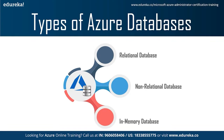The second type is the non-relational database, also known as NoSQL databases. A NoSQL database provides a mechanism for storage and retrieval of data modeled in means other than the tabular relations used in relational databases. Non-relational databases are increasingly used in big data and real-time web applications, and sometimes called 'not only SQL' to emphasize that they may support SQL-like query languages or sit alongside SQL databases.